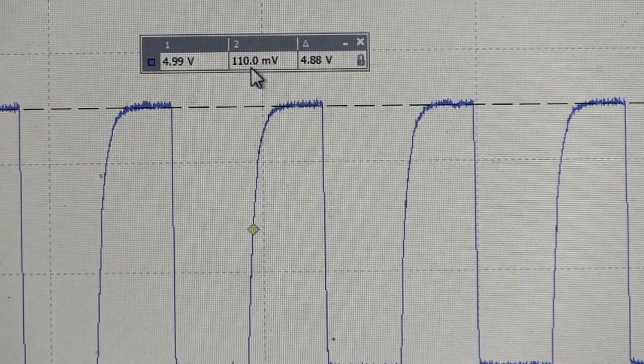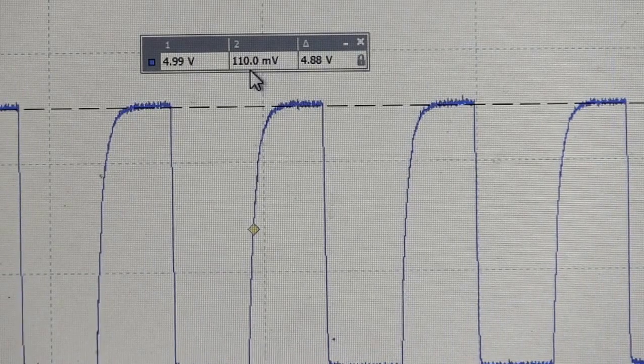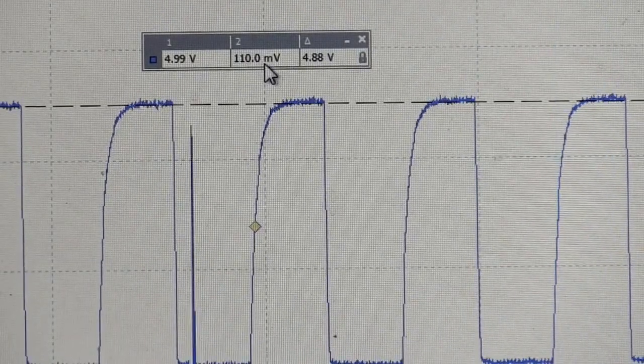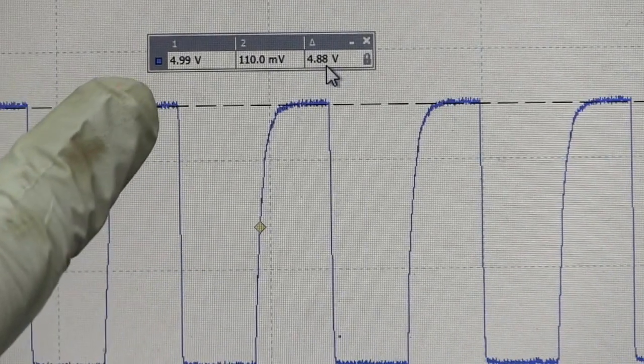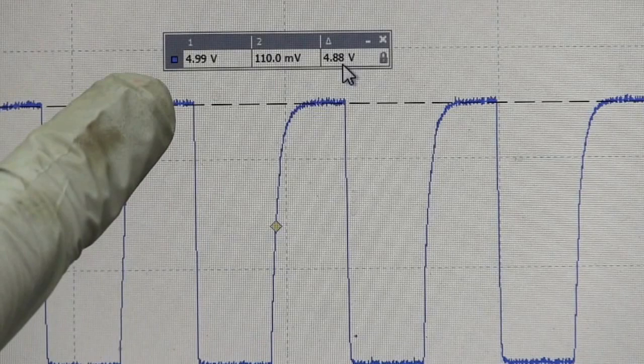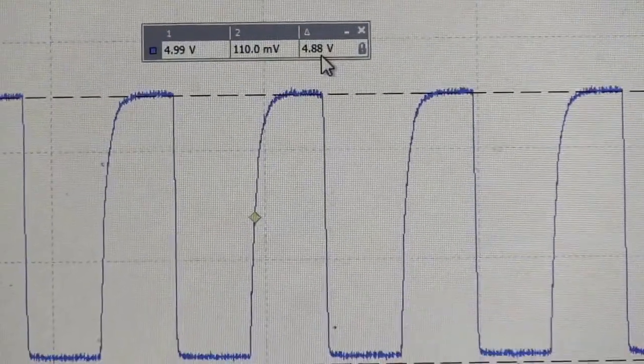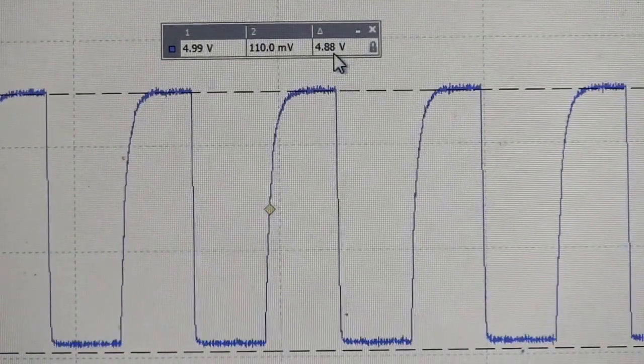Cursor number two is down near zero. We're only at 110 millivolts, so that's not very much. It's very close to zero. The difference between cursor number one, or the high, and cursor number two, the low, is 4.88 volts. It already does the math for us as well, so that's pretty convenient.